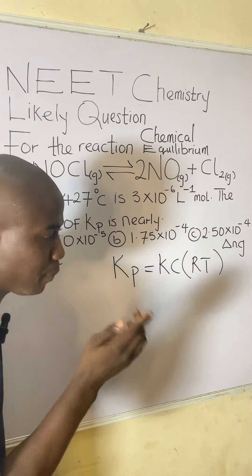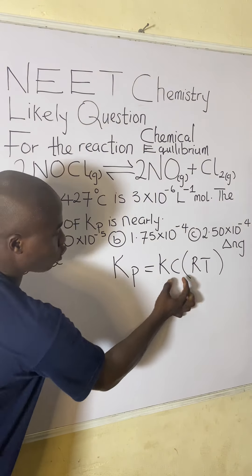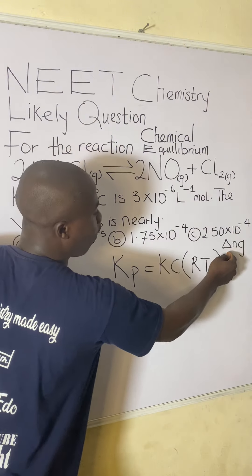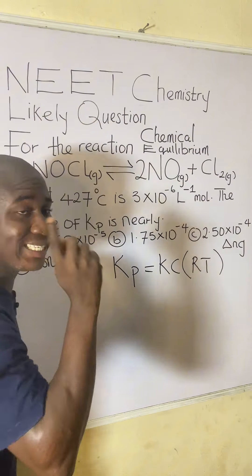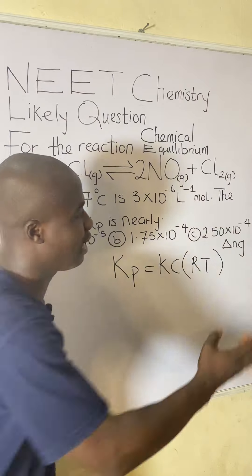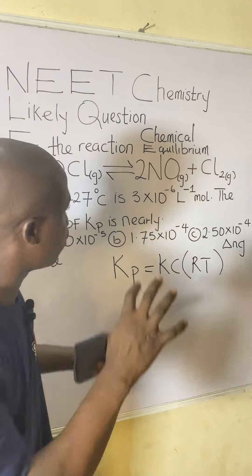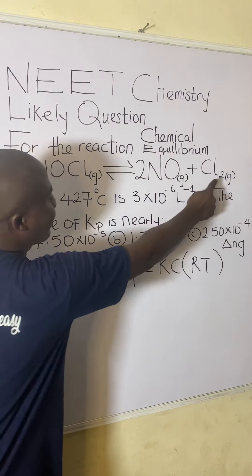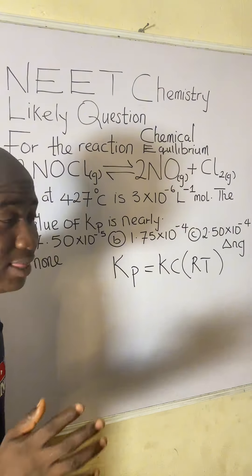I repeat, Kp is equal to Kc, open bracket, RT, close bracket, RT raised to power of change in numbers of moles of the gases. This sign means change, and n means numbers of moles, and g means gases. So all of the species in this reaction should all be in gases. I believe you can see that.